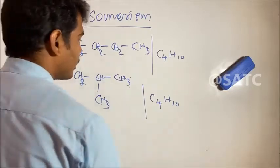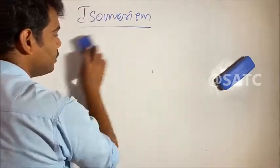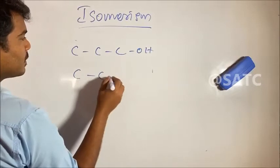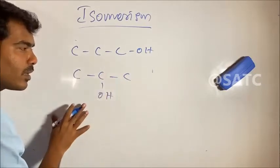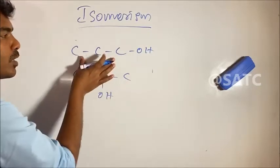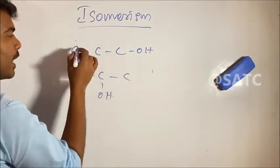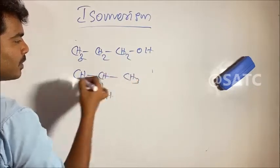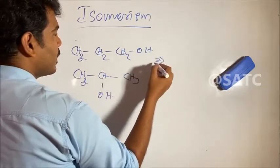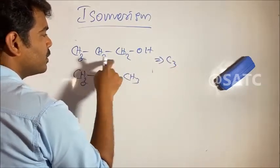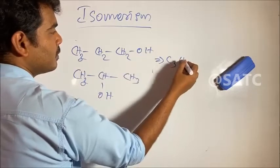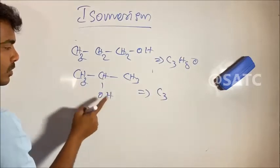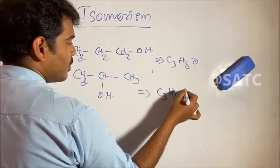Another example: a chain of carbons with an OH group. We have CH3, CH2, CH3 — that is C3, with 8 hydrogens and one oxygen. Another arrangement: CH3, CH3, CH3 — also 3 carbons, 8 hydrogens, and one oxygen. Same molecular formula.